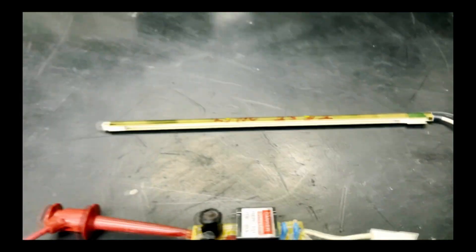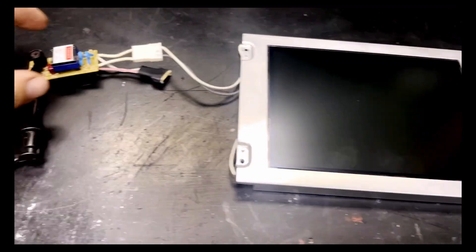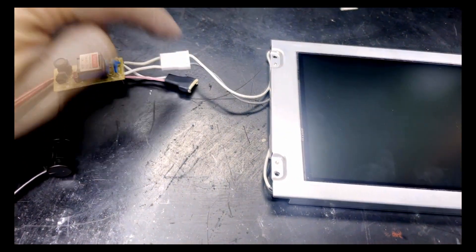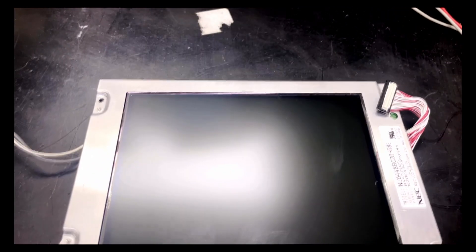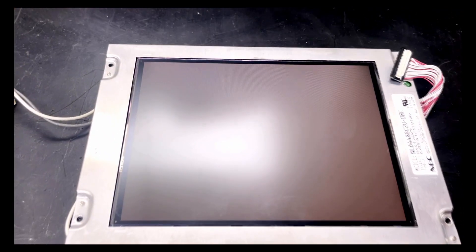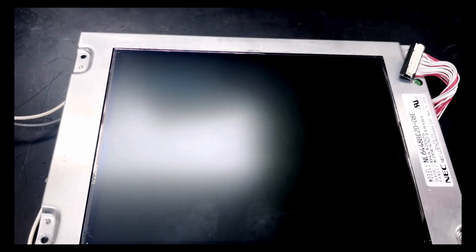Now we are going to test the actual bulbs on the LCD display. Here we have the first bulb hooked up. So we are going to go ahead and provide power. As you can see we do have a backlight. You can see that change from very dark to illuminated.